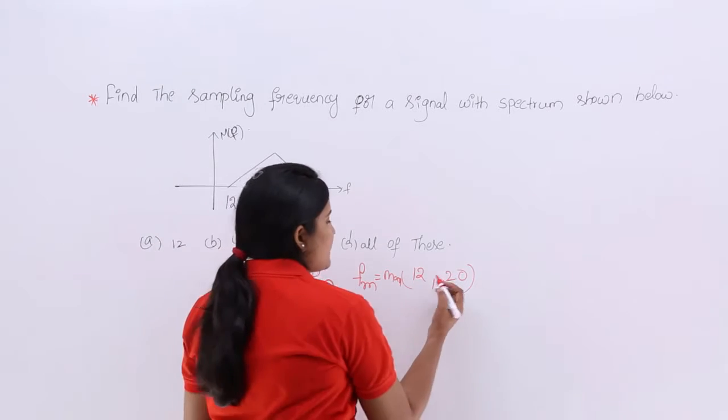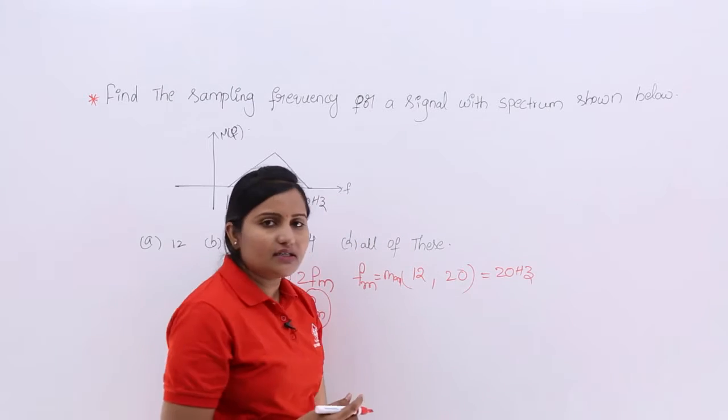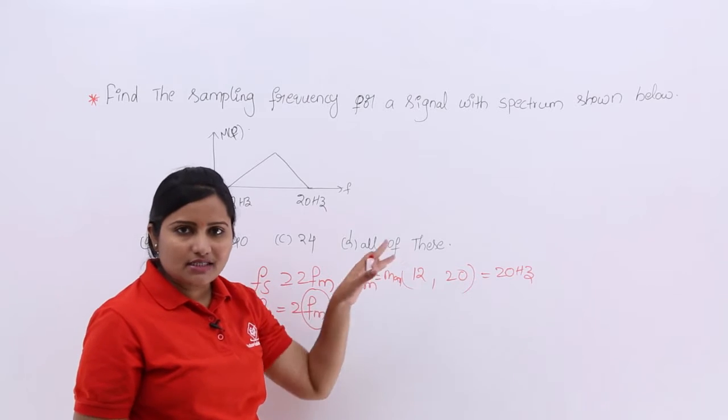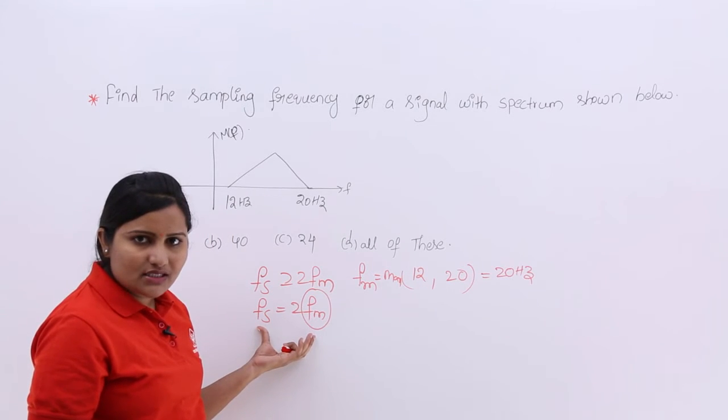In these two, the maximum frequency component is 20 hertz which can be considered as frequency of your message. Now, by considering 20 hertz as your fm, I am going to calculate my sampling frequency fs.